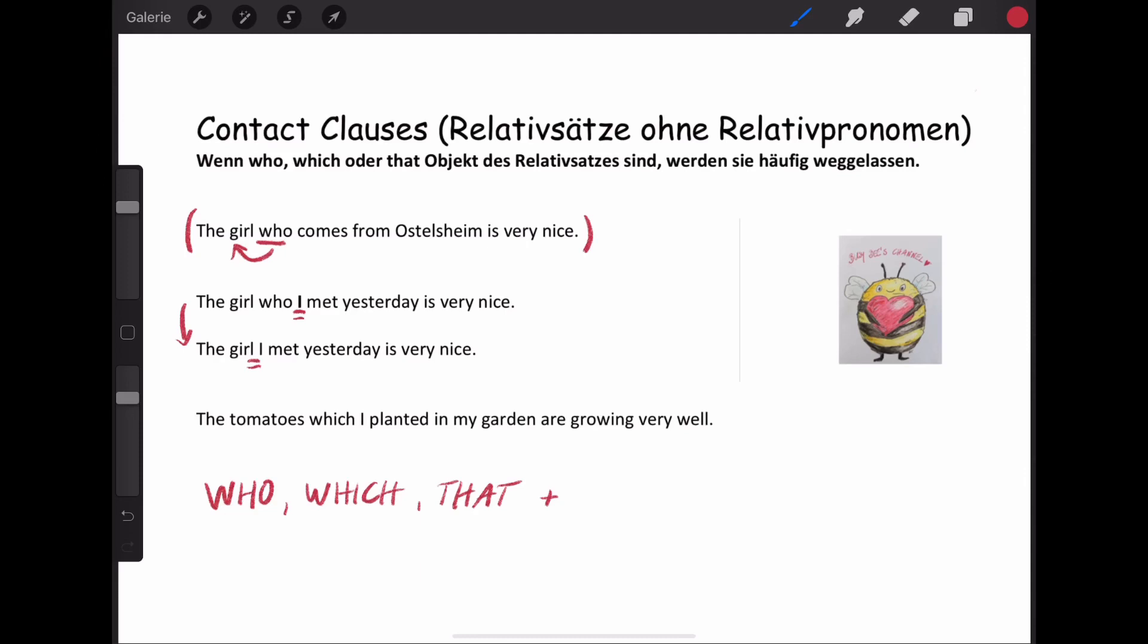Okay. In the second sentence, we can also skip that. The tomatoes which I planted in my garden are growing very well. I have a person after the which, so I can skip the which. And then the sentence would be the tomatoes I planted in my garden are growing very well. That sounds very sophisticated. If you use a contact clause, you don't have to skip it. But if you know how to do that, that shows me that you really understood that. Again, who, which and that plus a person. That means, you can cross those ones out.